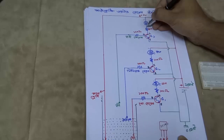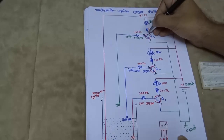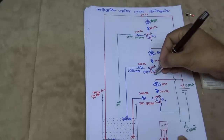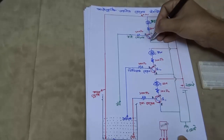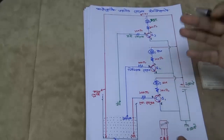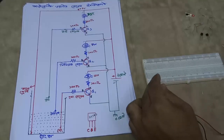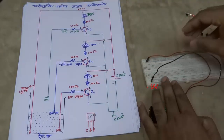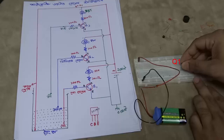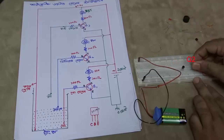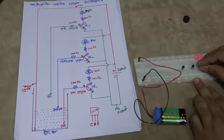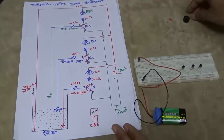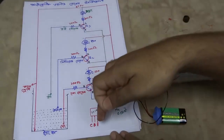The emitter, which is the 3rd pin, connects to ground. Now we will make the breadboard circuit. First we give power from the battery — positive and negative. We place 3 transistors, and the collector connects to a 100 ohm resistor.